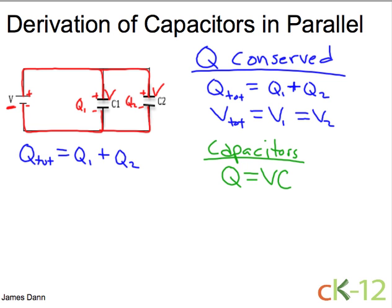And so if we plug that in here, we get that the total voltage times the total capacitance is equal to the voltage across the first capacitor times its capacitance, plus the voltage across the second capacitor times its capacitance. But we know from right here that the voltages are all the same because they're connected in parallel.